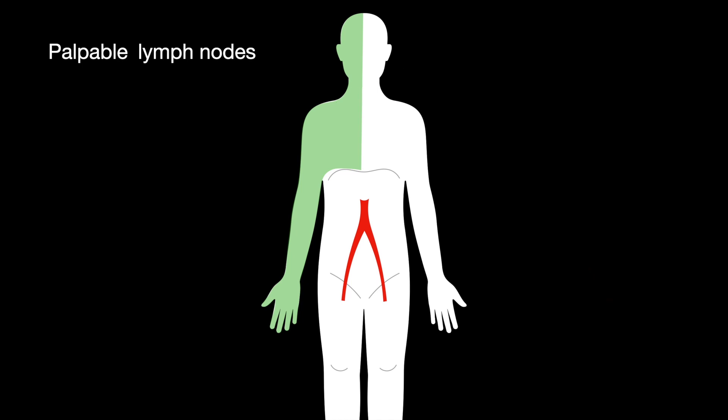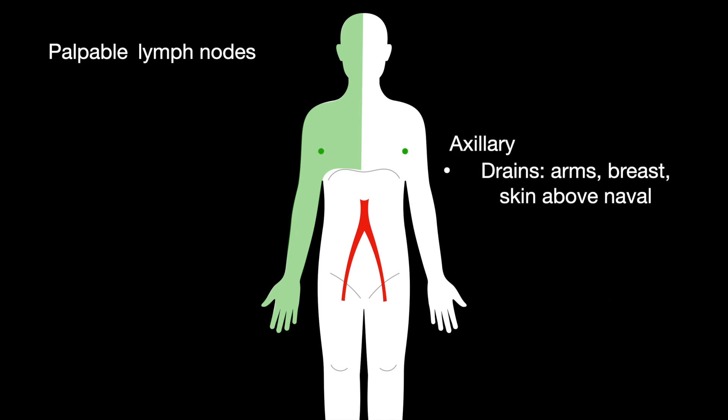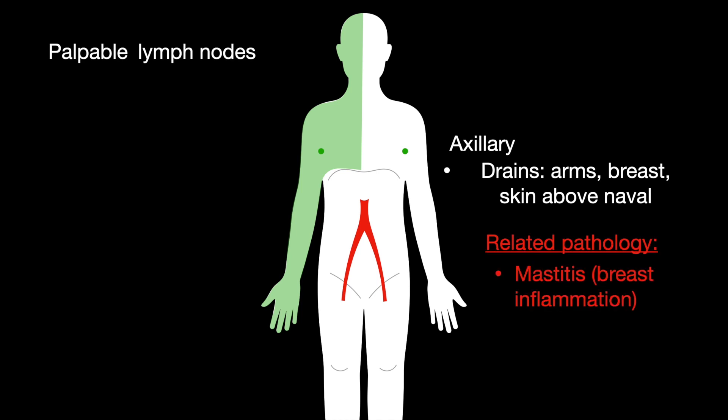The axillary lymph nodes drain the arms, breasts, and skin above the navel. Related pathology includes mastitis, which is breast inflammation, and breast cancer metastasis.